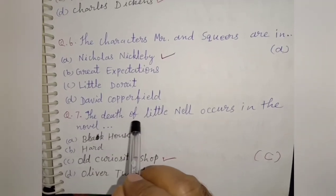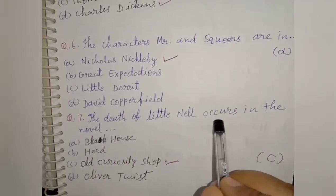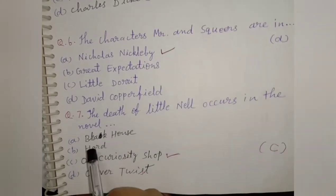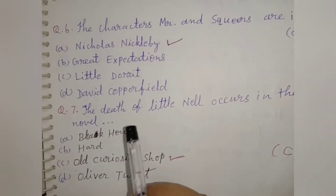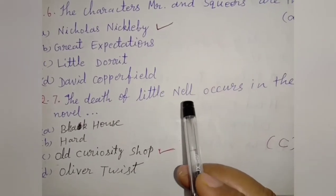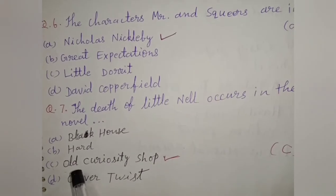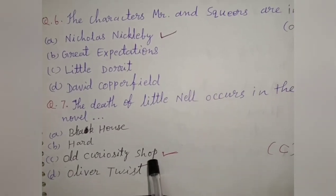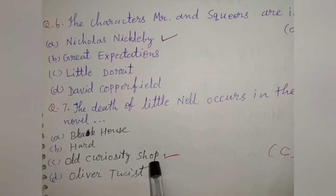Next question: The death of Little Nell occurs in which novel? This is an important question. The death of Little Nell occurs in The Old Curiosity Shop, a novel written by Charles Dickens.